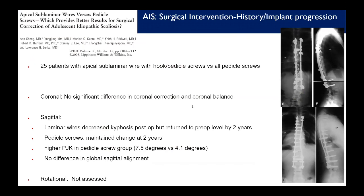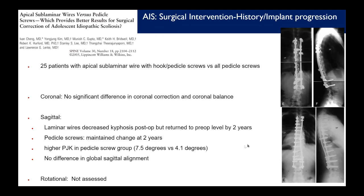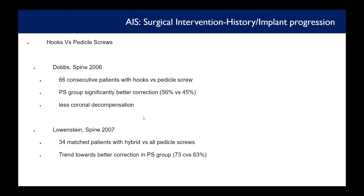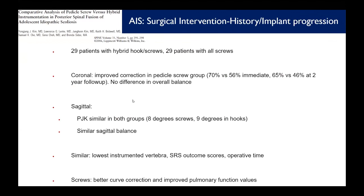An early 2000s paper comparing pedicle screws versus hooks, wires, and hybrid techniques found no difference in coronal correction or coronal balance. In the sagittal plane, laminar wires decreased kyphosis post-operatively but returned to pre-op levels by two years, while pedicle screws maintained correction at two years but had a higher PJK rate. Fused levels and estimated blood loss were lower in the pedicle screw group; cost was higher. There were no neurologic injuries in either group. The field has since moved almost entirely to all-pedicle-screw constructs.